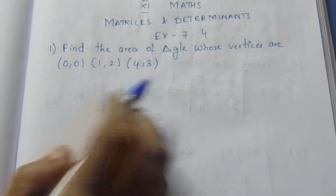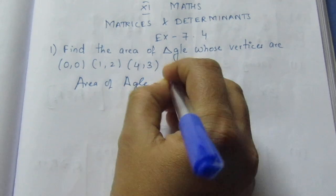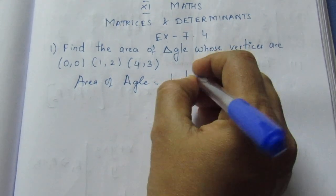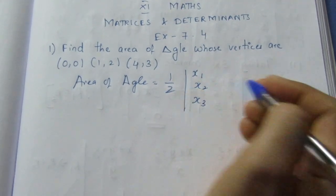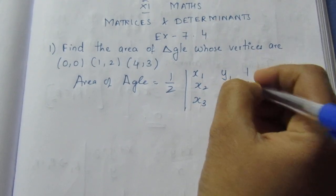The area of a triangle is equal to half into the determinant. The formula is x1, x2, x3, y1, y2, y3.